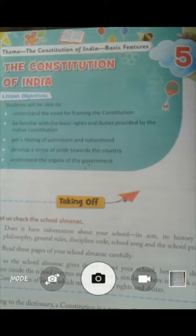The Constitution was drafted by the Constituent Assembly and this assembly consisted of 389 members. It took about three years to draft the Constitution. The Constituent Assembly was a truly representative body and Dr. B.R. Ambedkar was the chairman of the drafting committee. The Indian Constitution is the longest written constitution in the world, which came into effect on 26 January 1950.